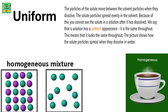Uniform. The particles of the solute move between the solvent particles when they dissolve. The solute particles spread evenly in the solvent. Because of this, you cannot see the solute in a solution after it has dissolved. We say that the solution has a uniform appearance — it is the same throughout. The picture shows how the solute particles spread when they dissolve in water. It is also called a homogeneous mixture.